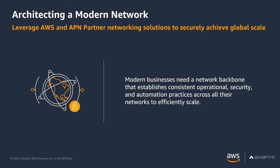Whether it be hybrid connectivity, automated network provisioning, monitoring, and operational visibility across the breadth of your business, you can leverage AWS and Aviatrix together to get enterprise-class advanced networking and security capabilities on AWS.